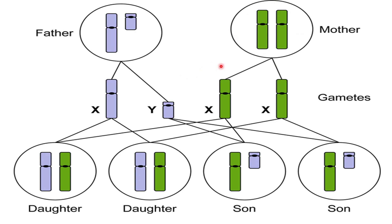The sex chromosomes in females consist of only X chromosomes, while males have two sex chromosomes: X chromosome and Y chromosome. If the X chromosome of the father unites with the X chromosome of the mother, you will have a daughter. If the Y chromosome of the father unites with the X chromosome of the mother, you will have a son. So a couple has 50% chances of having a daughter and 50% chances of having a son.